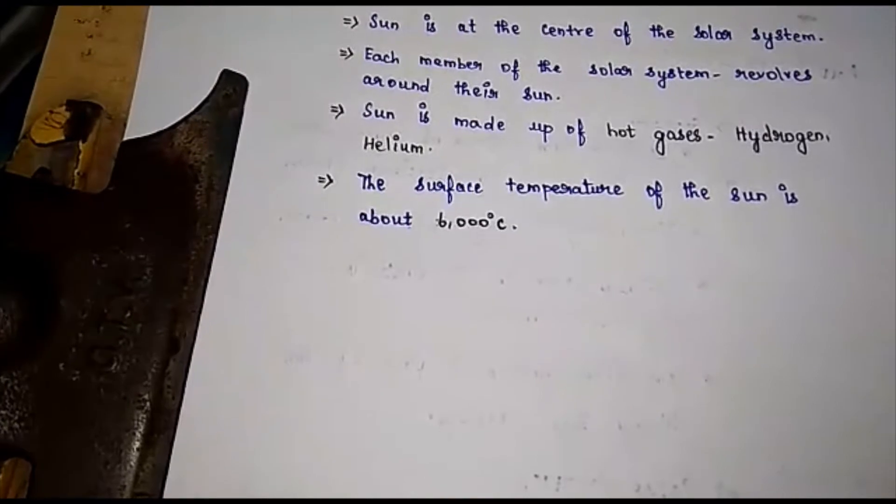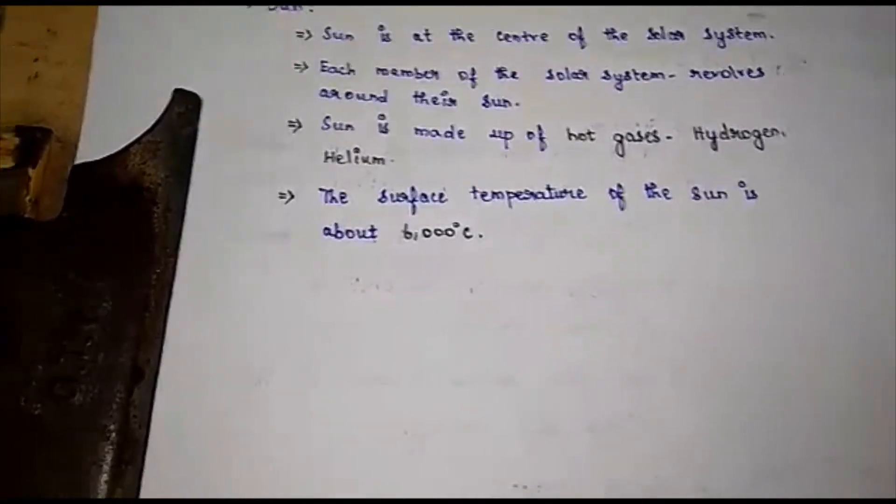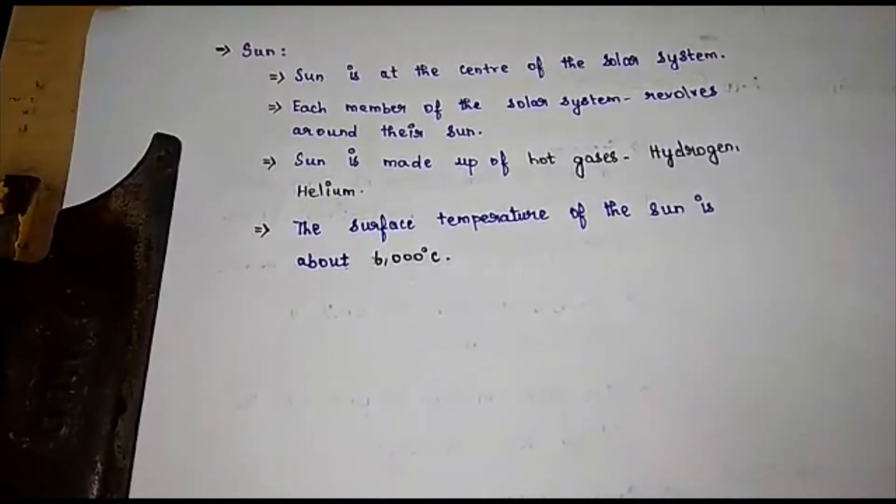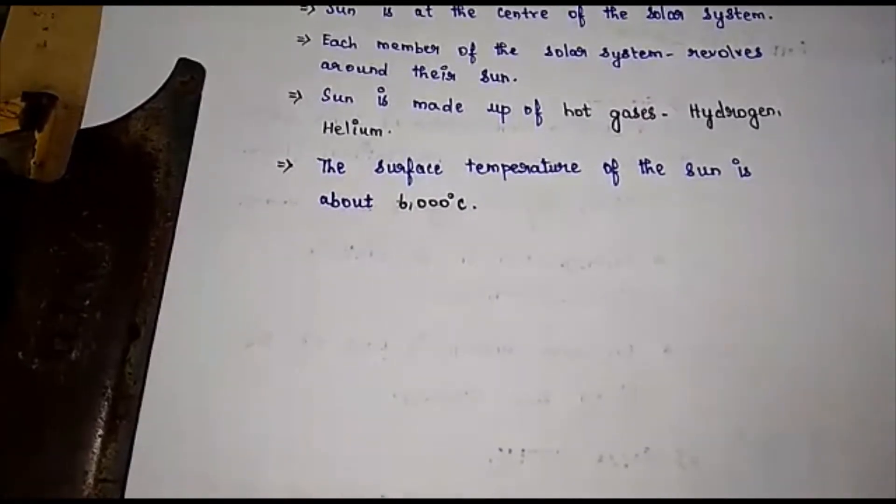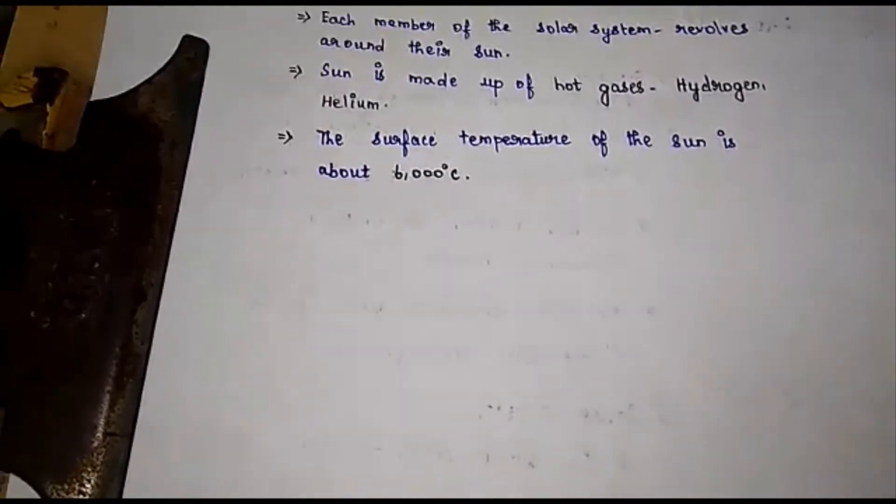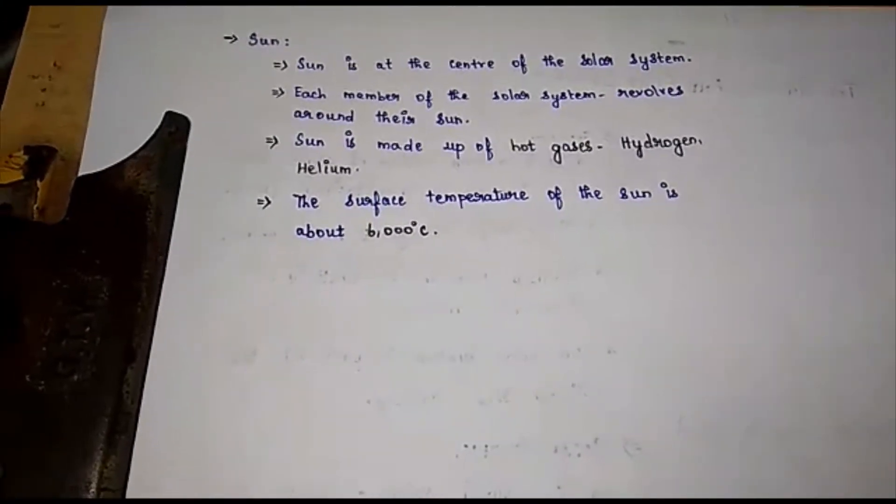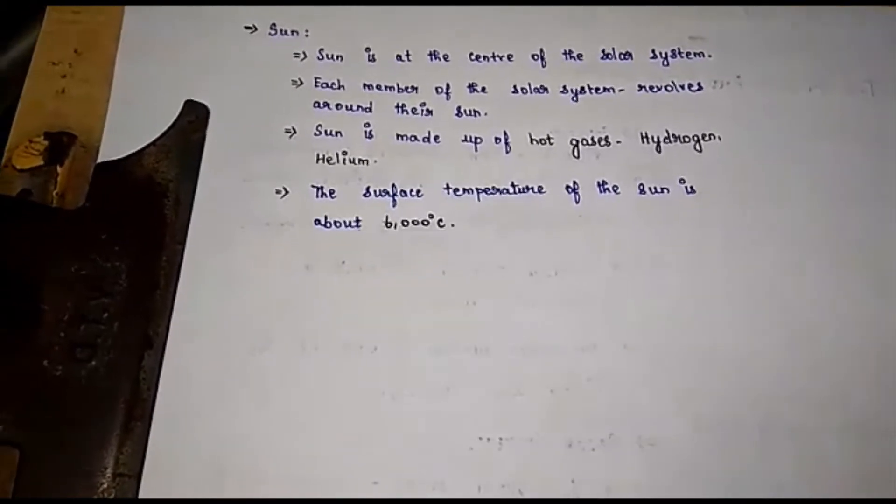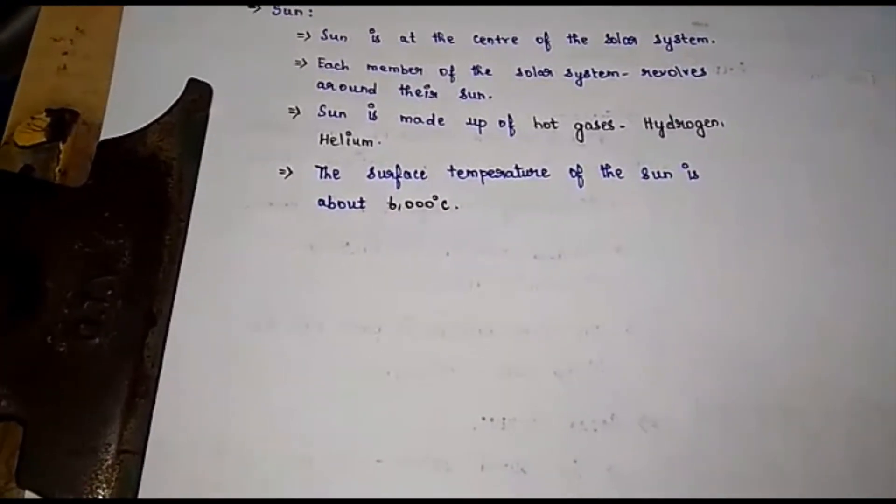The surface temperature of the sun is about 6000 degrees Celsius. The sun's surface temperature is 6000 degrees Celsius. It is a source of light and heat energy to the entire solar system. The sun provides heat energy and light to the solar system.